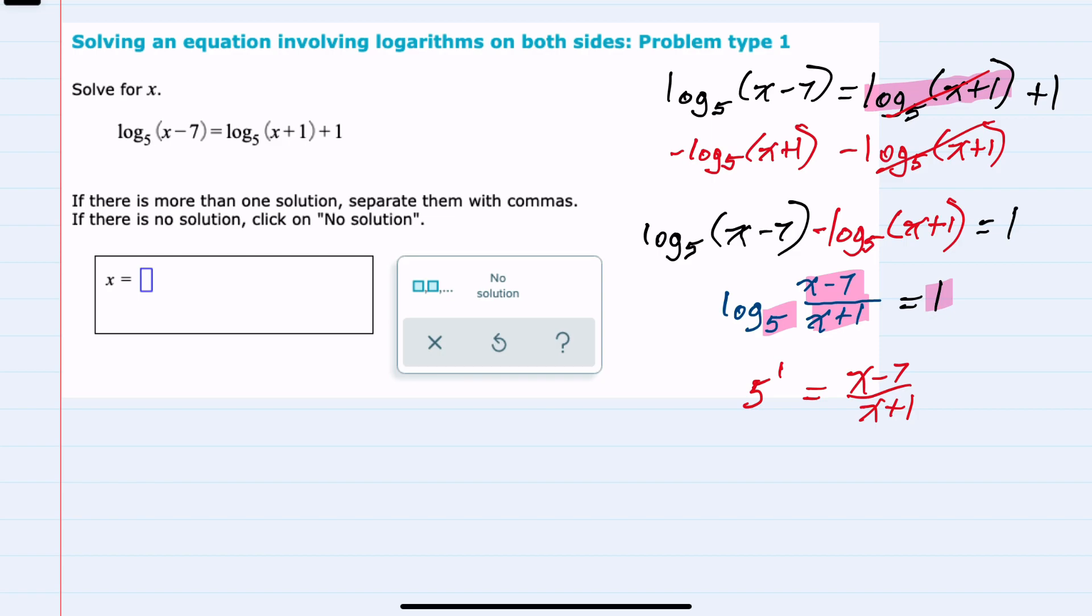Simplifying that left-hand side would just be 5, and I can continue to solve by getting rid of the fraction. Multiplying both sides by x plus 1 would cancel the x plus 1s on the right-hand side and leave me 5 times x plus 5 after distributing on the left equals x minus 7.